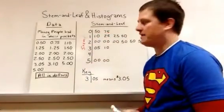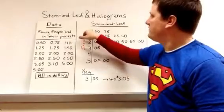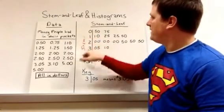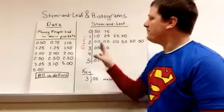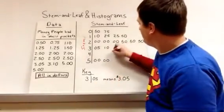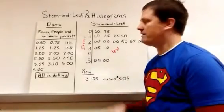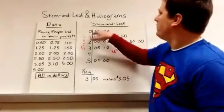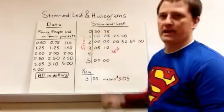This left side is the stem, this is what we're grouping by. So my first grouping was by zero dollars, second by one dollar, two dollars, three, four, and five. And then I put my leaves on the right side based off of where they group. So the 50 here goes with the zero, meaning 50 cents.